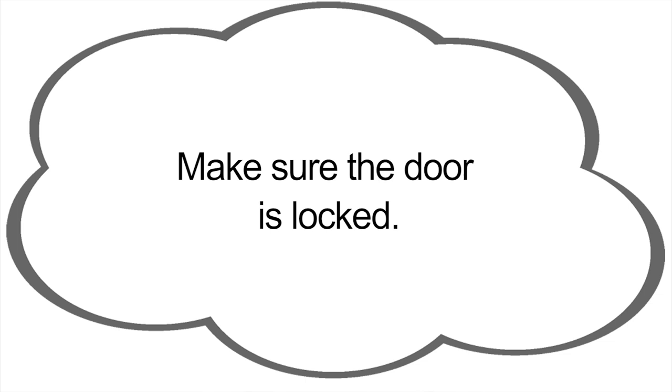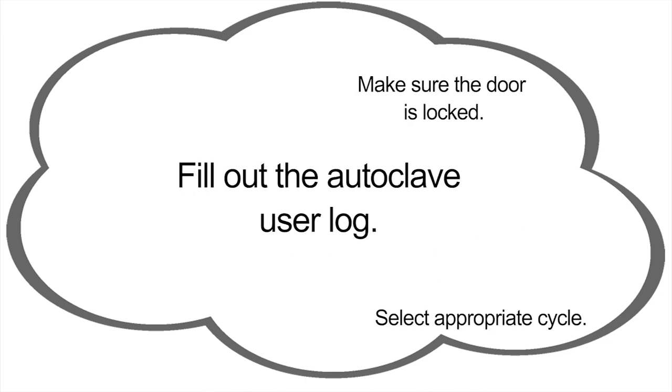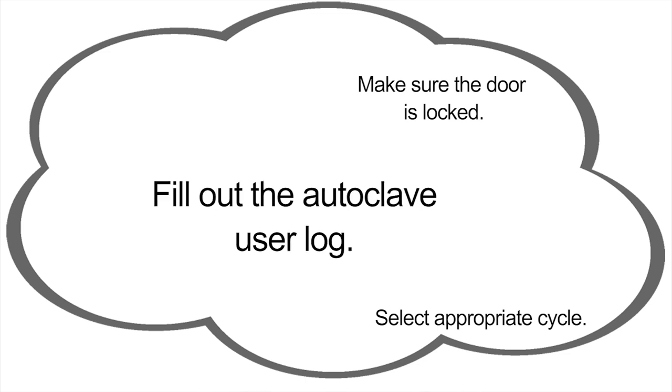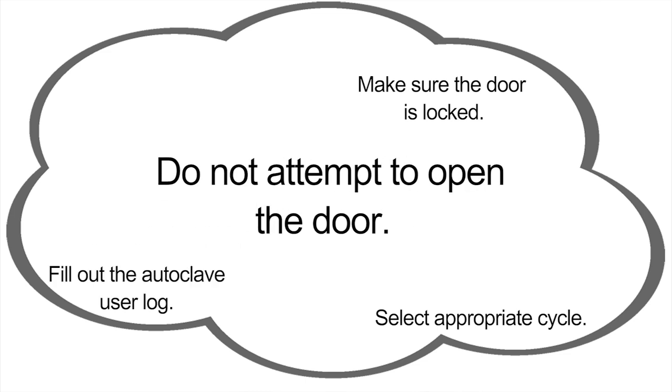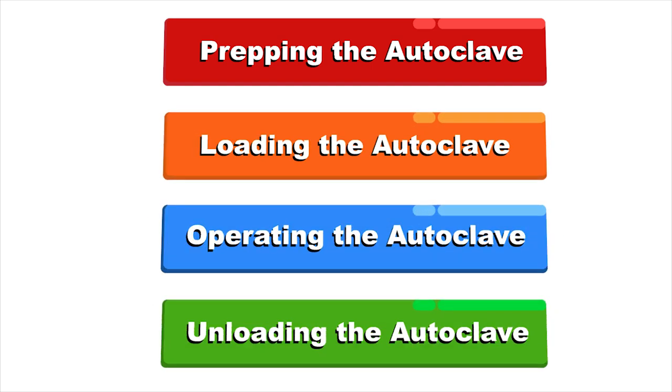To summarize operating an autoclave: make sure the door is locked securely. Select appropriate cycle. Fill out the autoclave user log. Do not attempt to open the door while in operation.